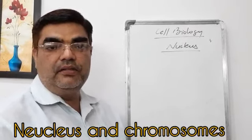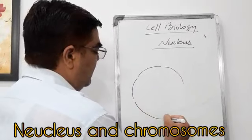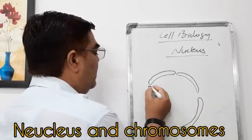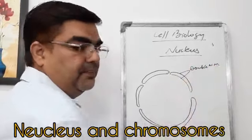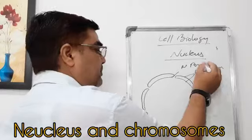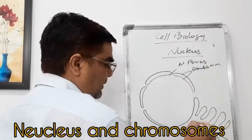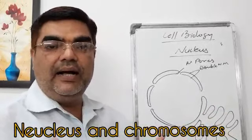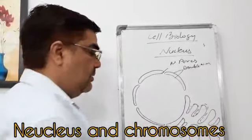The nucleus is a double-membrane, double-layered cell organelle. I am going to draw the nucleus. This is the inner layer, or inner membrane, and this one is the outer or external membrane — so a double nuclear membrane. There are some pores present in the nuclear membrane; they are called nuclear pores. From the outer membrane, there is an extension of finger-like structures known as the endoplasmic reticulum. If the endoplasmic reticulum has ribosomes on it, it is called the rough endoplasmic reticulum, or rough ER.